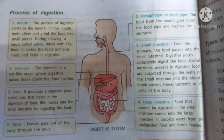Second is the esophagus, or food pipe. The esophagus is also called the food pipe. The food from the mouth goes down the food pipe and reaches the stomach. Third is the stomach. The stomach is a sac-like organ where digestive juices break down the food further.